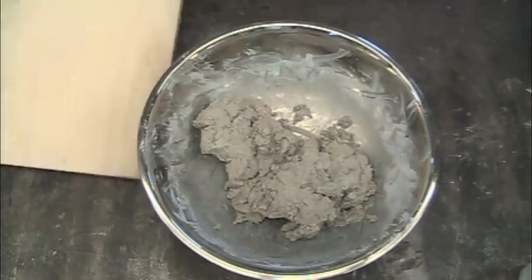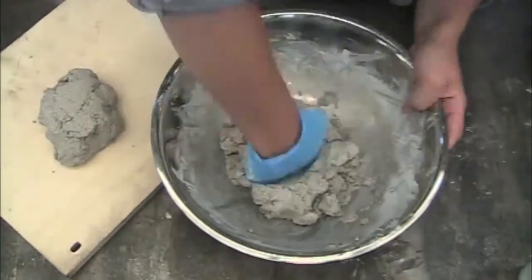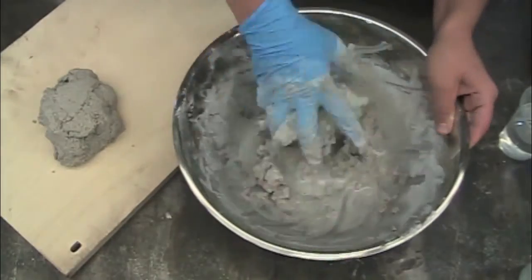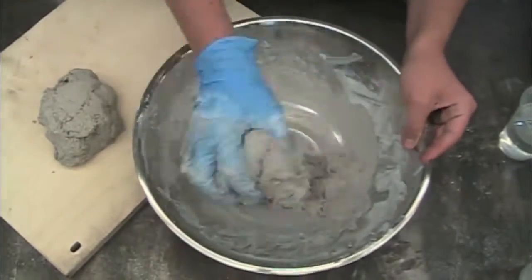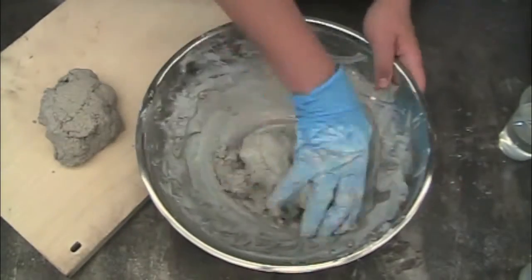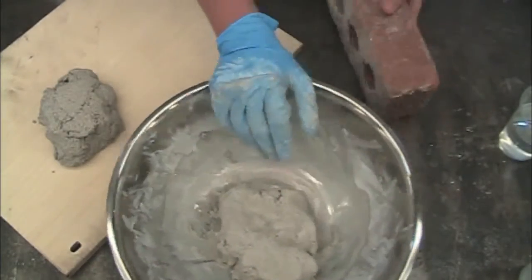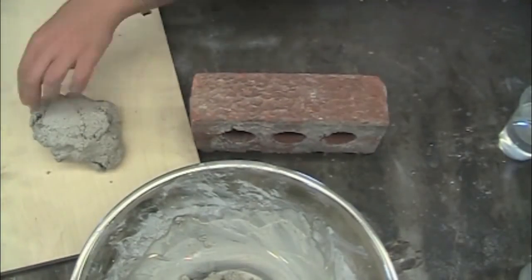But what happens when you add too much water? Let's try it! When you add a bit too much water the mix starts to get nice and creamy. The mortar is smooth, slippery and pliable. It's more fun to play with when it's too wet. Why wouldn't you want this for repointing your wall?